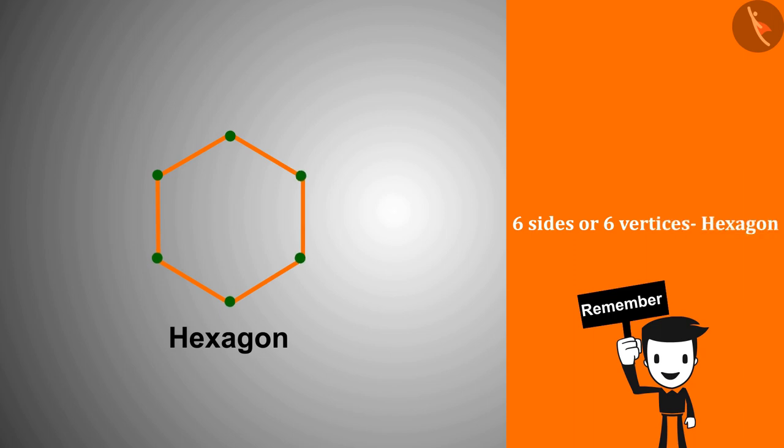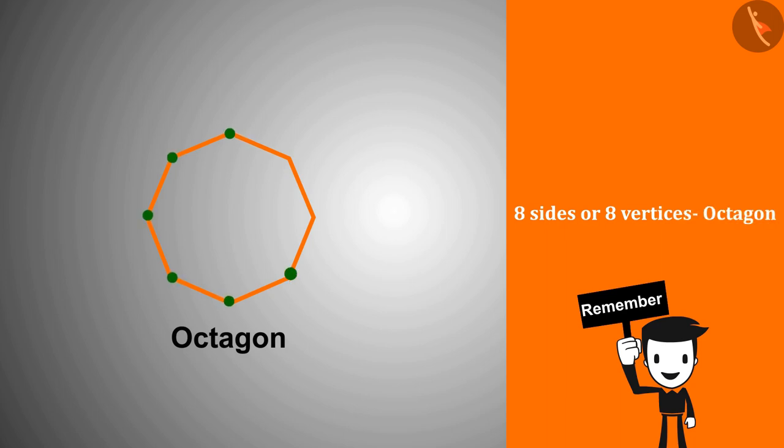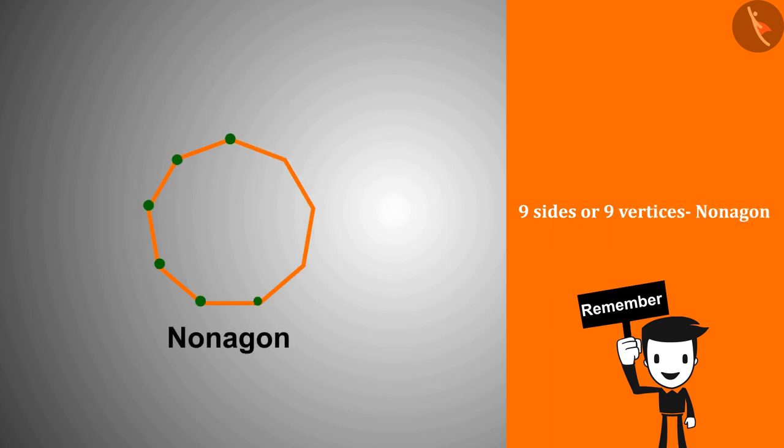A shape with five sides or vertices is called a pentagon. A shape with six sides or vertices is called a hexagon. A shape with seven sides or vertices is called a heptagon. A shape with eight sides or vertices is called an octagon. A shape with nine sides or vertices is called a nonagon. A shape with ten sides or vertices is called a decagon.